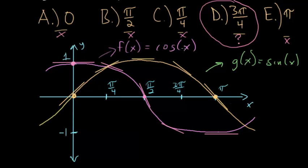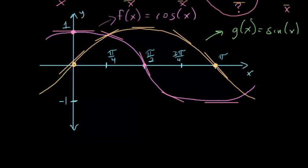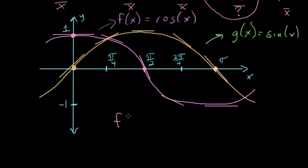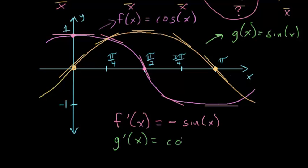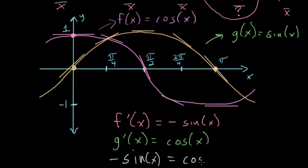Let's check that using more analytic methods. We'll take the derivative of each of these functions and set them equal to each other. The derivative of cosine is minus sine of x, and the derivative of sine is cosine of x. To find which x values give f and g the same slope, we set these two derivatives equal: minus sine of x equals cosine of x.